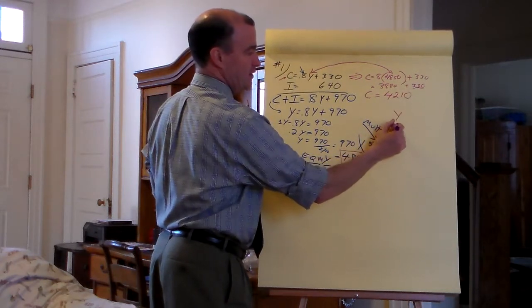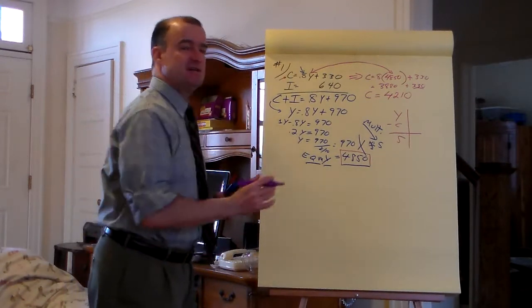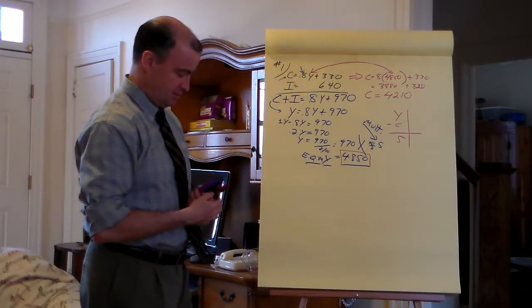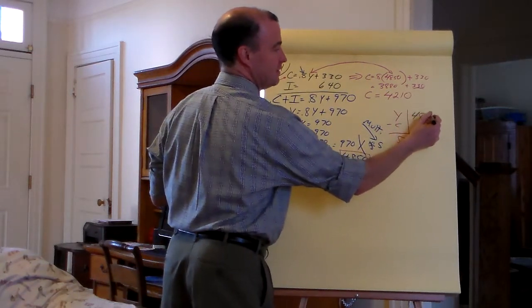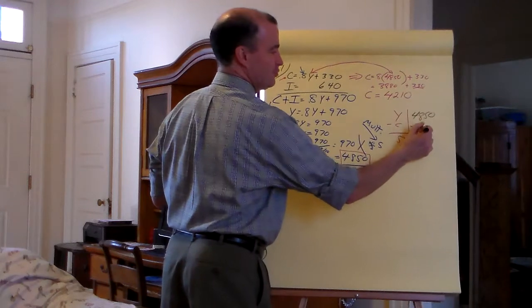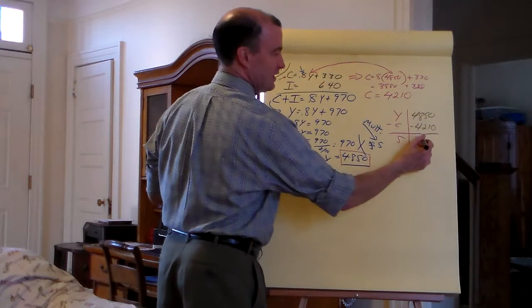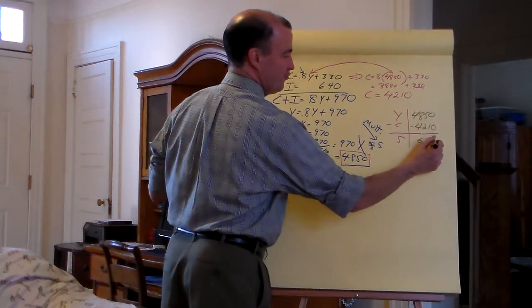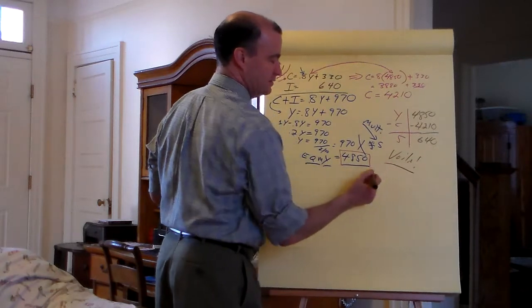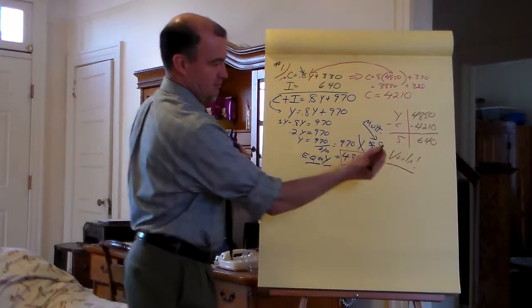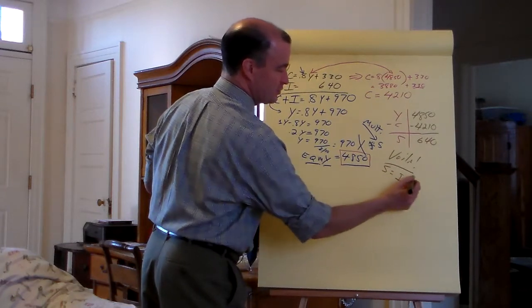we have an avenue now to get the total saving. Because C plus S is the income. We've got these two numbers: income of $48.50 minus $42.10 — that's exactly $6.40. S equals I, which is what's supposed to happen here.